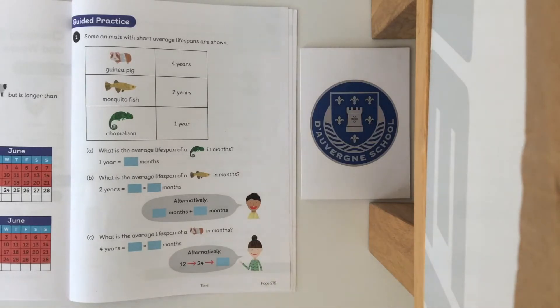Question number one says some animals with short average lifespans are shown. A guinea pig lives for four years, a mosquito fish lives for two years and a chameleon lives for one year.